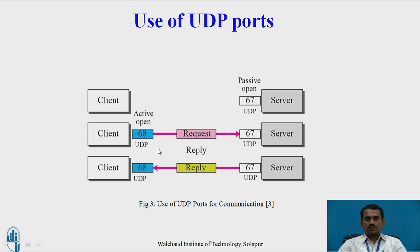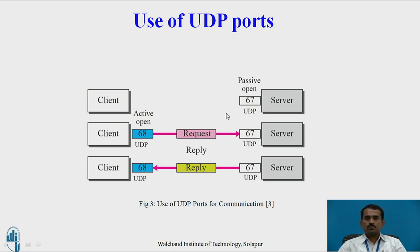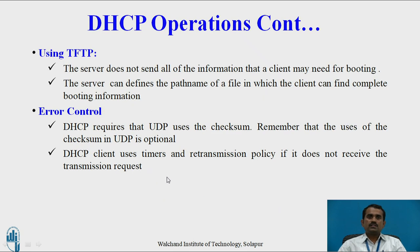Regarding UDP ports: the DHCP protocol uses UDP. On the server side, a passive open is made using port number 67. On the client side, an active open is used. Port numbers 67 and 68 are well-known port numbers. Both client and server exchange data using these port numbers. Port 68 is used to send the request, and after receiving the request, the receiver replies using port number 68.